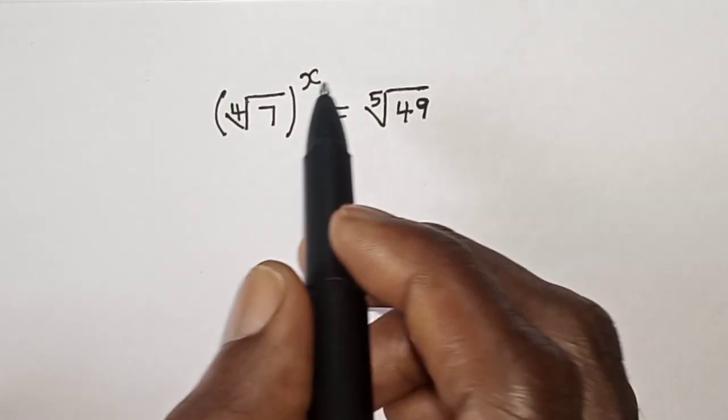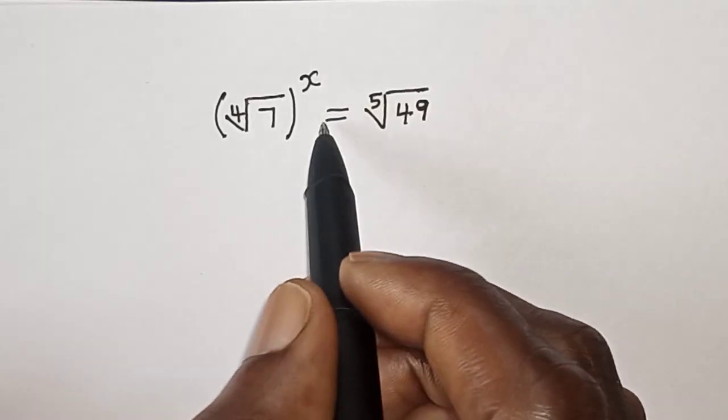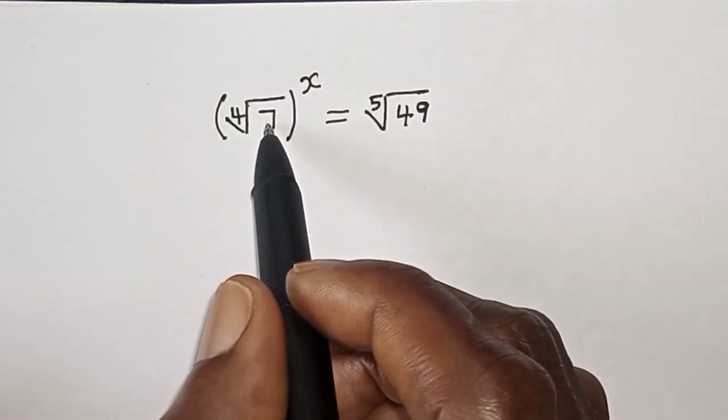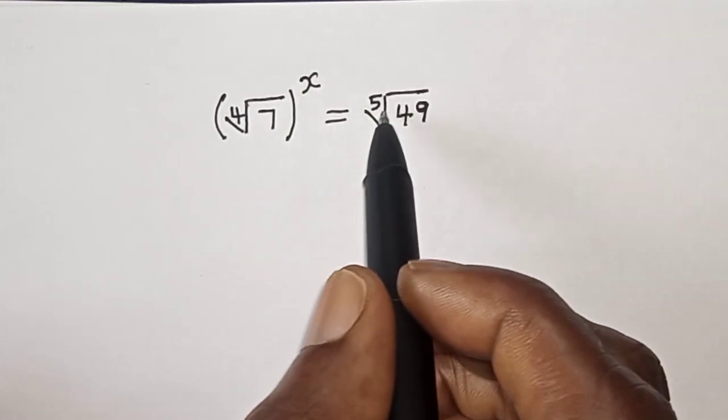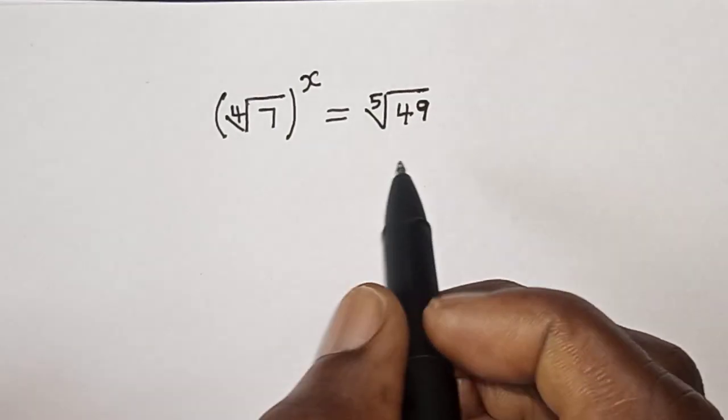Hi everyone, welcome to my class. In this class, we want to find the value of x from this equation: fourth root of seven raised to power x is equal to fifth root of 49.